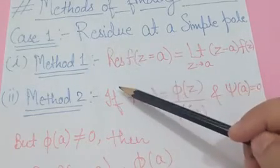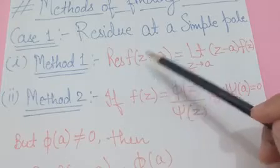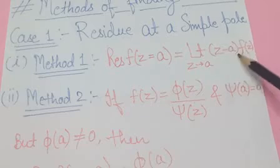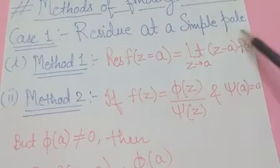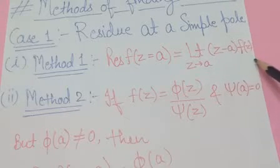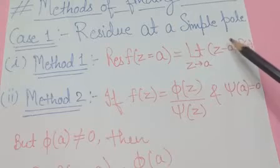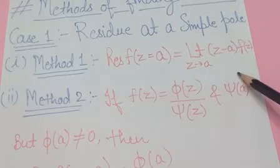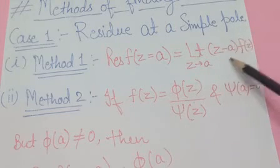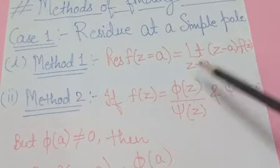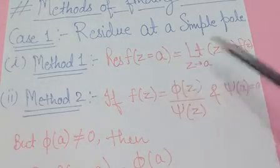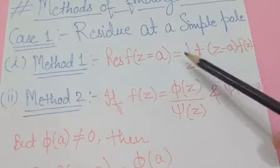According to Method 1, the residue at a simple pole is: limit as z tends to a of (z − a)·f(z). When you write f(z), the denominator contains (z − a), which simply cancels. After cancellation, substitute the pole value a in place of z in the remaining numerator and denominator terms to find the residue.